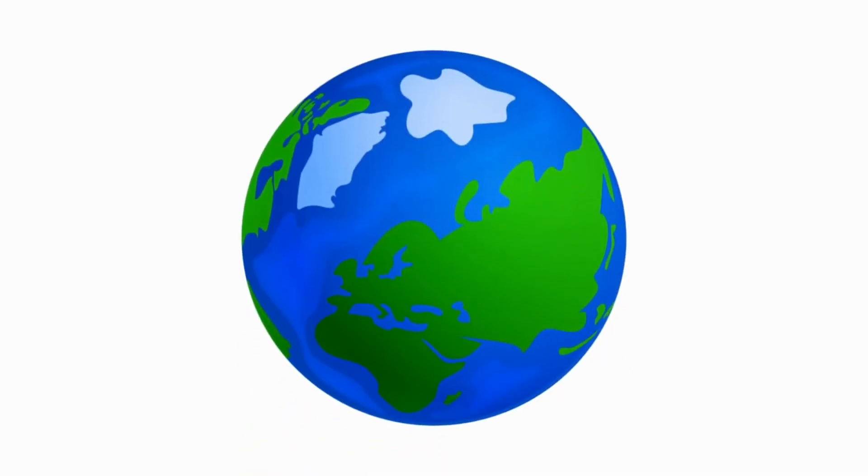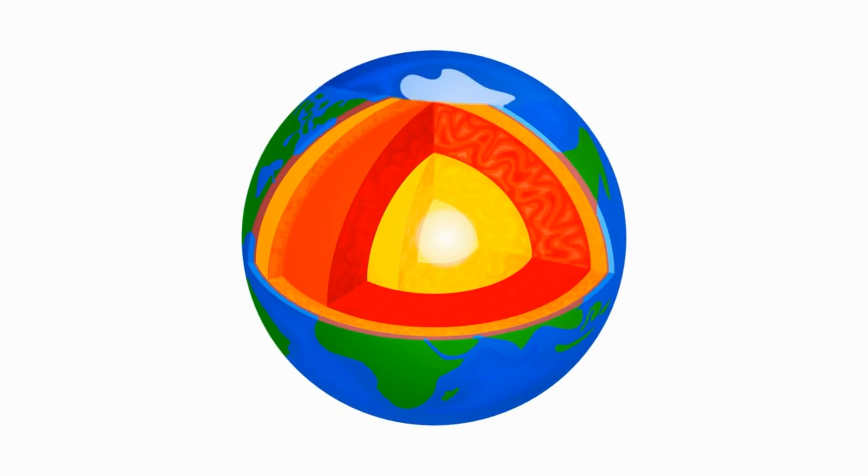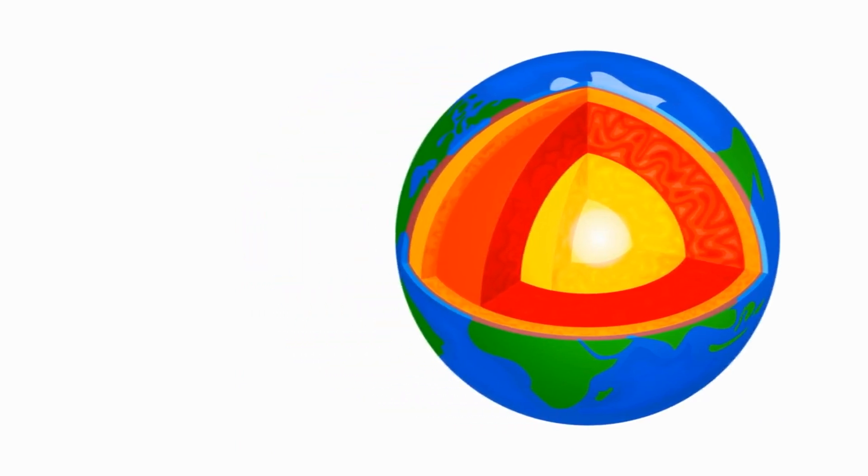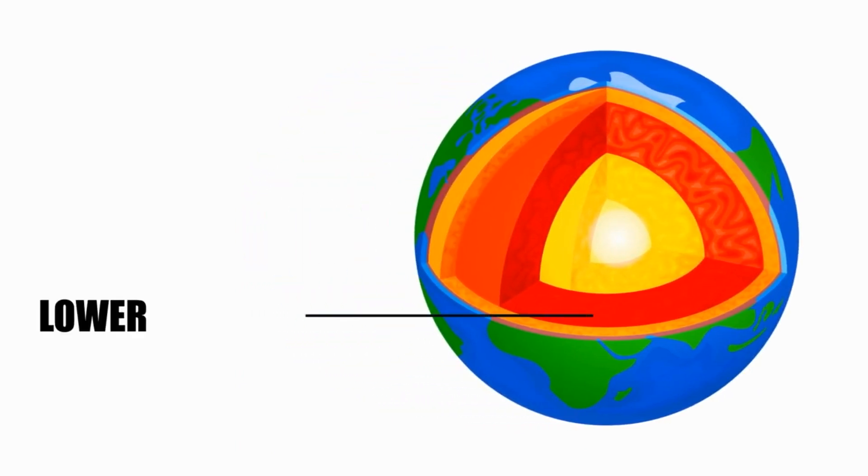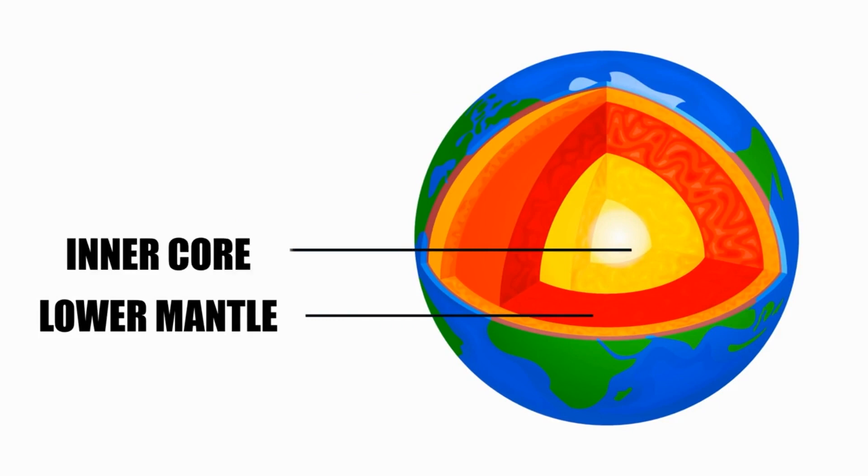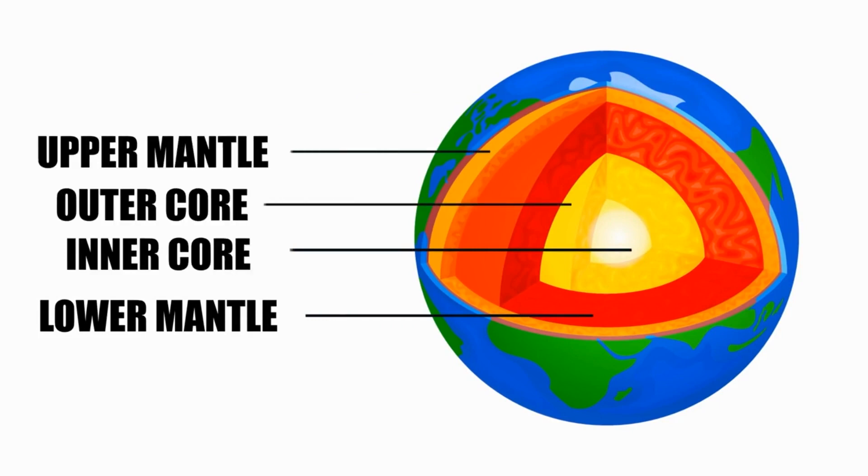Despite its proximity to us, the Earth's core remains a mysterious structure. We can categorize it into two parts, the inner core and the outer core. Additionally, it is predominantly composed of iron and is responsible for generating the Earth's magnetic field.